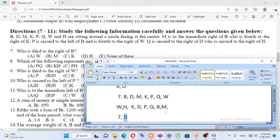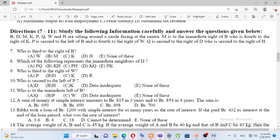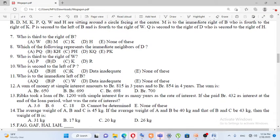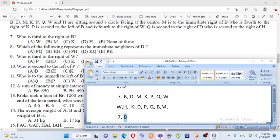None of the above. To the right of B, H is immediate right, so third is M. Which of the following represent the immediate neighbors of D? The answer is A, PQ.